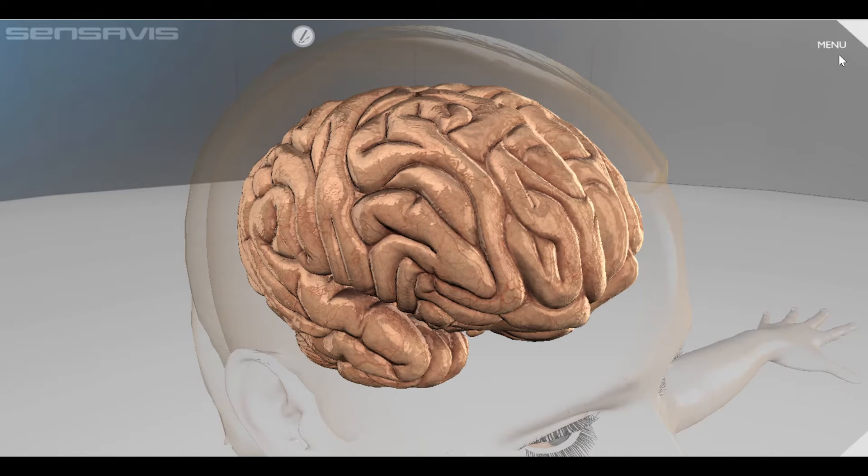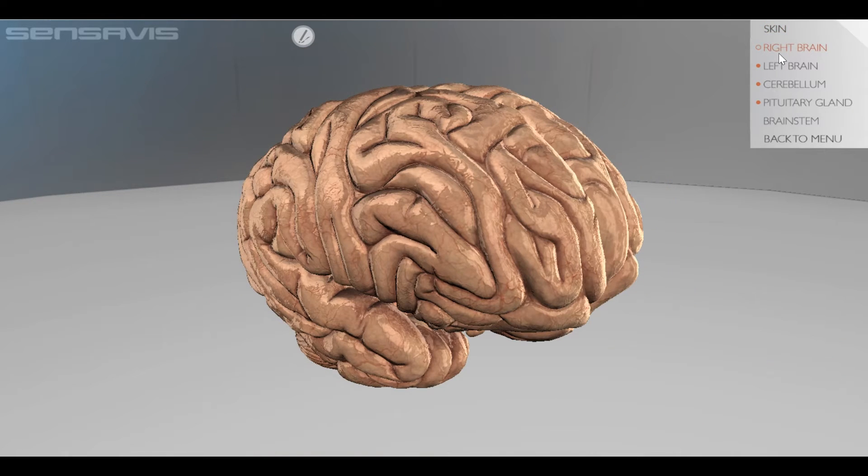Your brain consists of neurons that are connected and are constantly sending each other signals. So what exactly happens in the brain of a patient with Alzheimer's? Let's remove some of these layers and take a closer look.